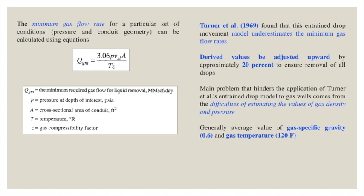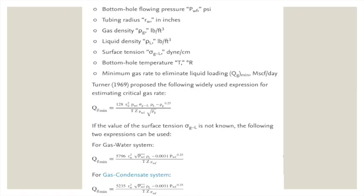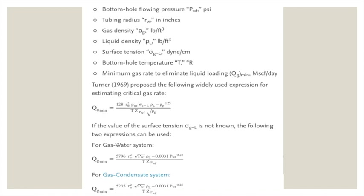This model was developed for a gas gravity of 0.6 and a gas temperature of 120°F, which is one of its limitations. Turner 1969 also proposed a relationship with parameters including bottom hole pressure, wellbore radius rw, surface tension σ between fluid phases, gas density ρg, liquid density ρl, and gas compressibility factor z at reservoir pressure. These are the different variables on which the minimum flow rate qm depends.